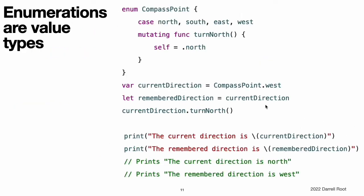The same behavior applies to enumerations. When rememberedDirection is assigned the value of currentDirection, it is set to a copy of that value. Changing the value of currentDirection thereafter does not affect the copy of the original value stored in rememberedDirection.